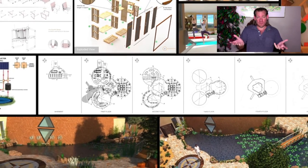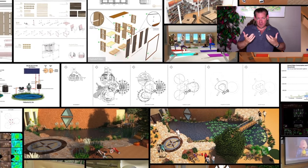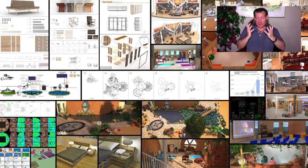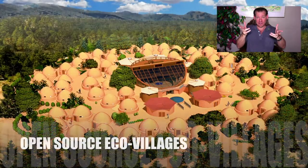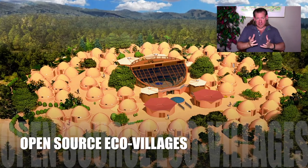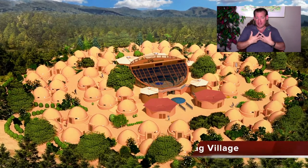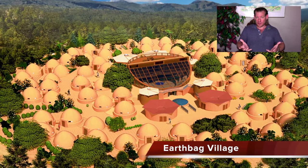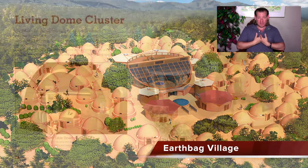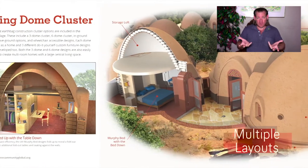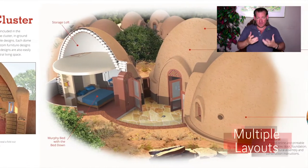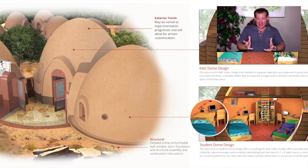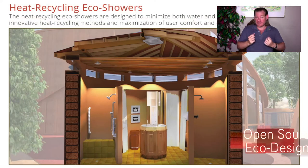Creating enough of these around the world so that everybody who wants to can participate and become a part of it, and as a residual, that everybody who doesn't want to has access to the foundational — what we call highest good — tools and resources to implement in their own lives, so that people can just start making a difference in their own abundance and their own sustainability on an individual level, even if they don't want to participate in the community and world change model.